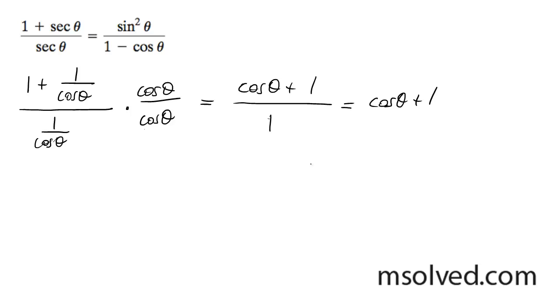It should actually be 1 plus cosine theta. Alright, here we go. So then we have 1 minus cosine theta over 1 minus cosine theta, which ends up being 1 minus cosine squared theta over 1 minus cosine theta.